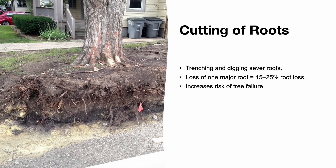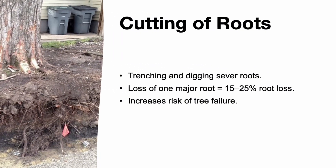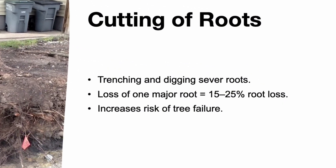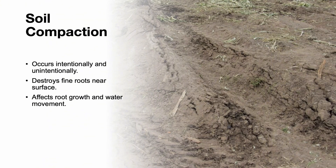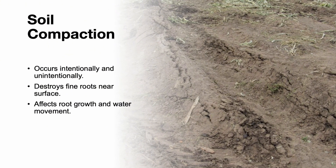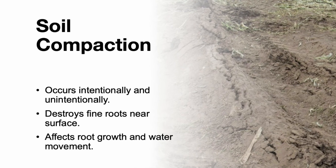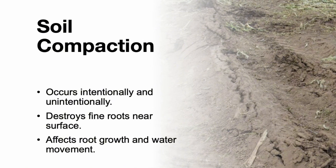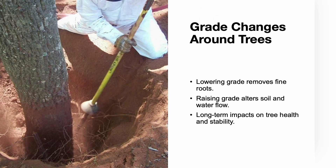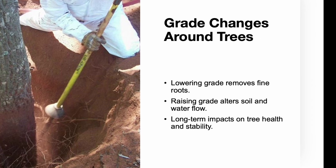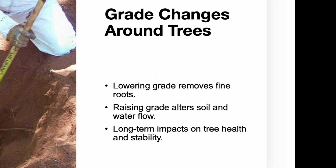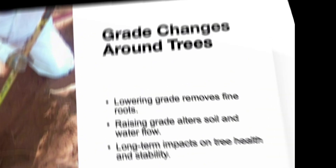Digging and trenching can sever roots, especially when close to the trunk. Losing one major root can destroy up to 25% of a tree's root system, affecting stability and water uptake, which increases the risk of tree failure later. Soil compaction, whether intentional or not, severely impacts root health. Heavy equipment kills fine roots and degrades soil structure, restricting water, air, and nutrient flow. Raising or lowering soil grades alters the delicate root zone. Removing topsoil can eliminate 90% of fine roots, while adding soil may suffocate roots if it's dense or compacted. Even minor grade changes can affect water flow.